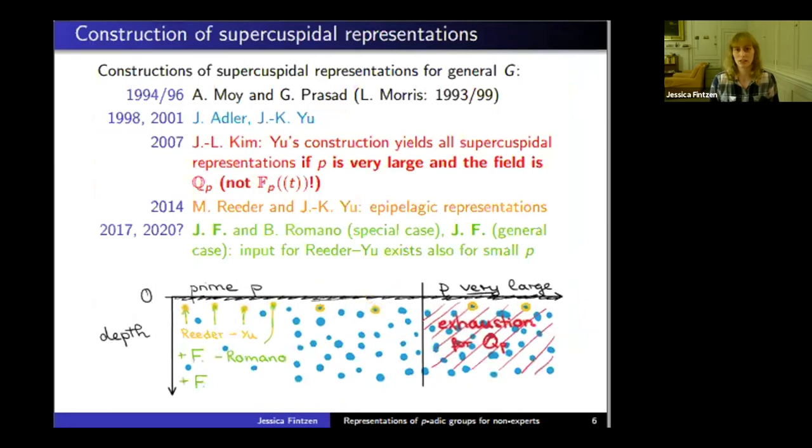What I've done, partially in joint work with Beth Romano, is show that the input exists also for small primes p. The result is that we obtain new representations that were not yet constructed by Yu. So Yu's construction doesn't give us all representations in full generality.